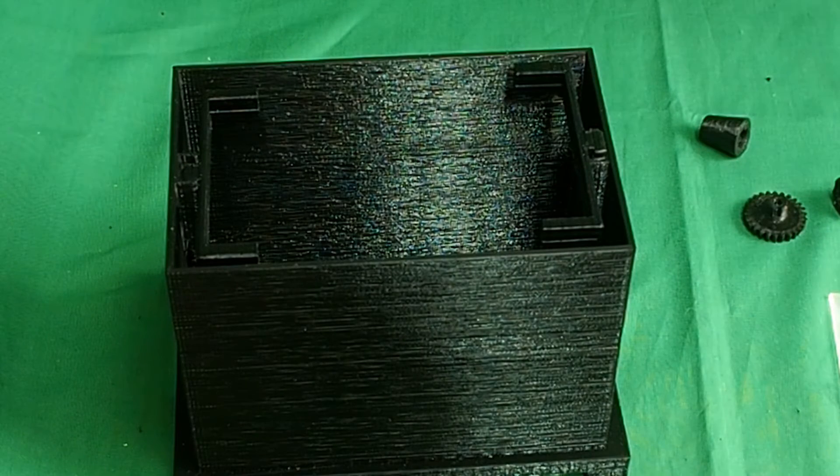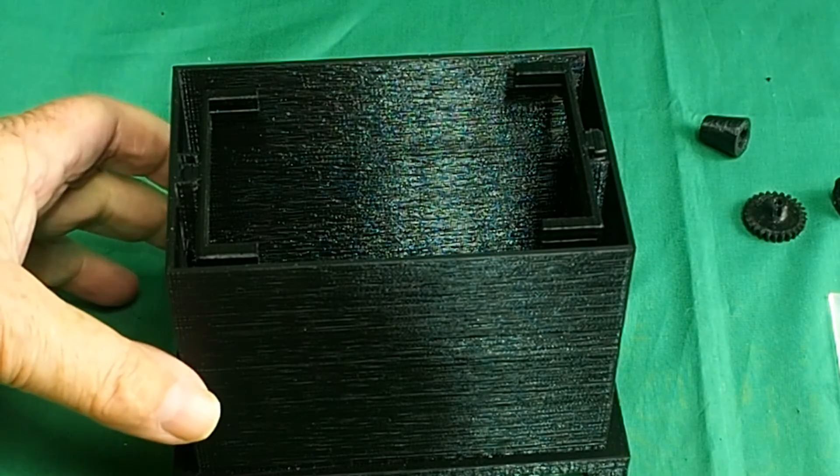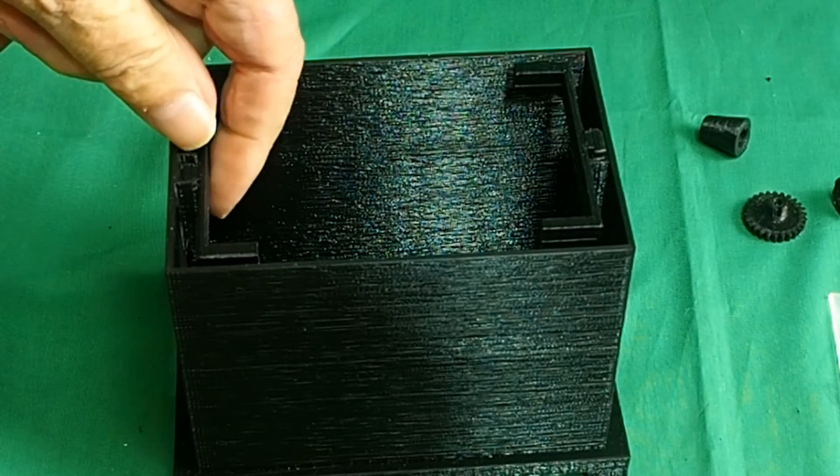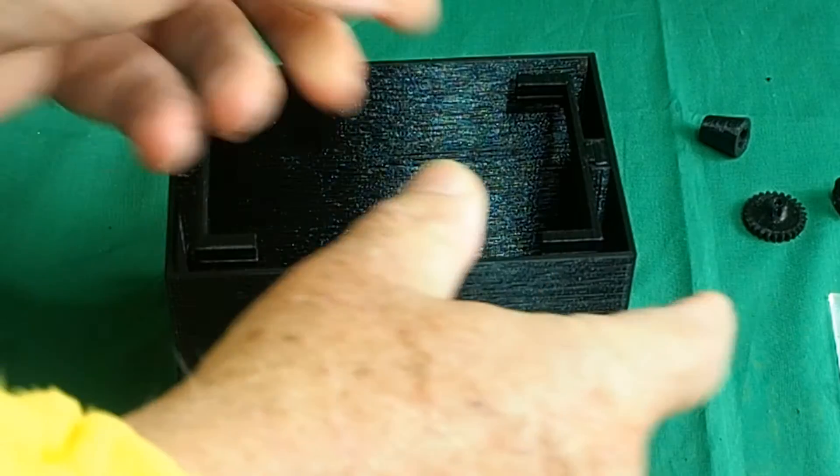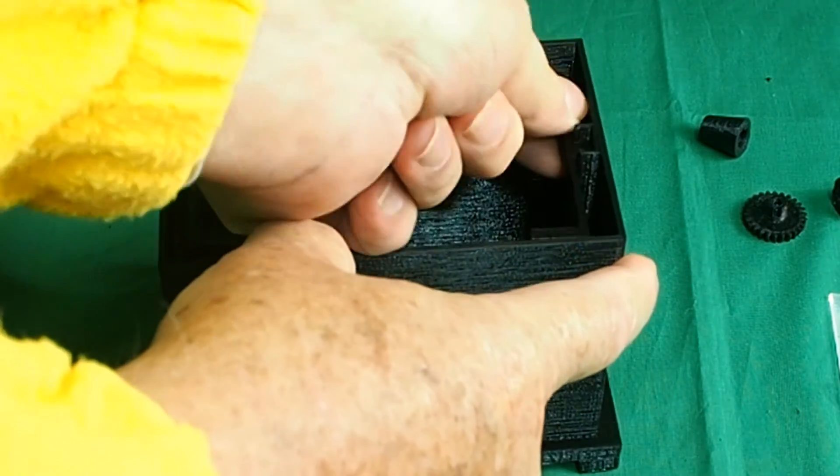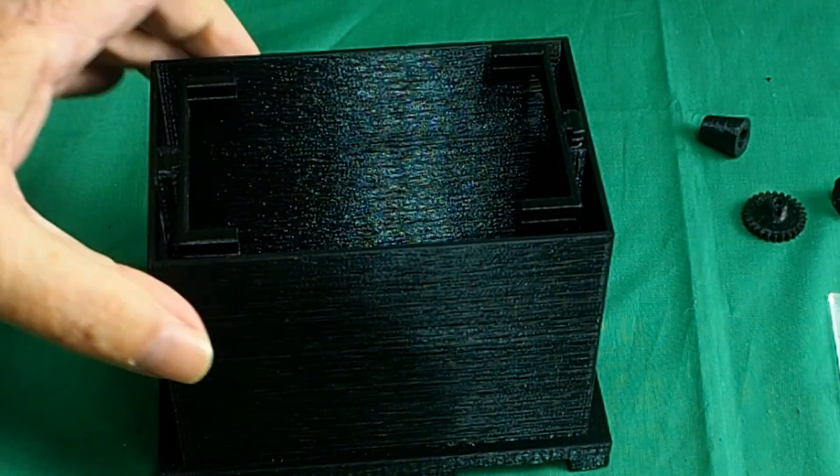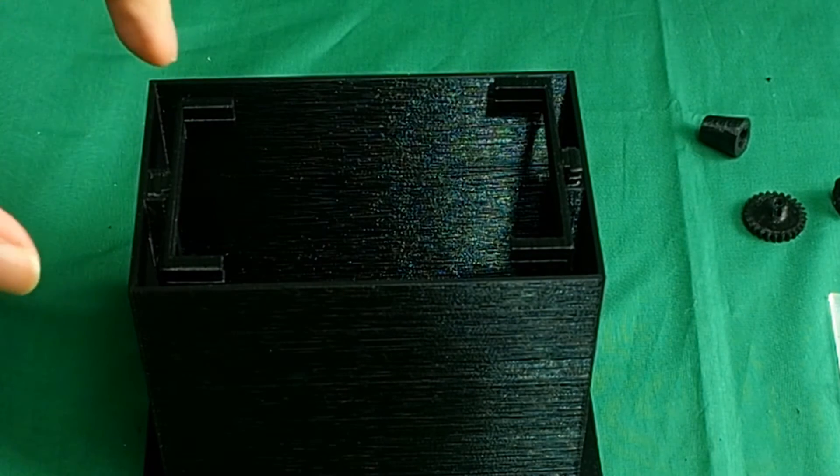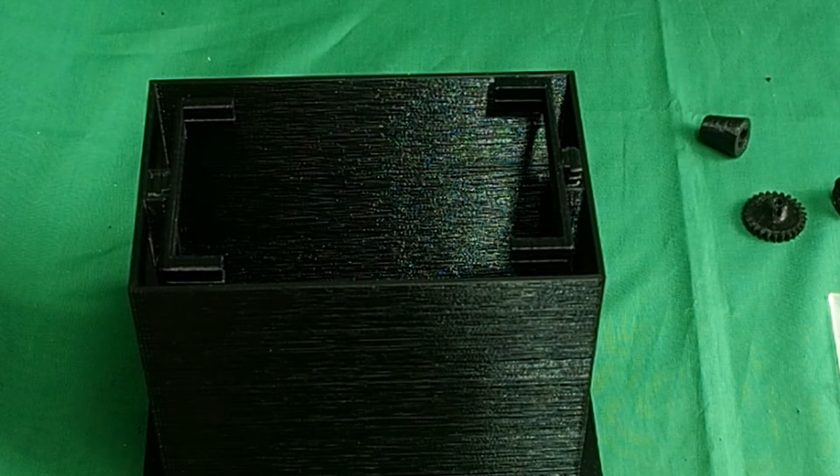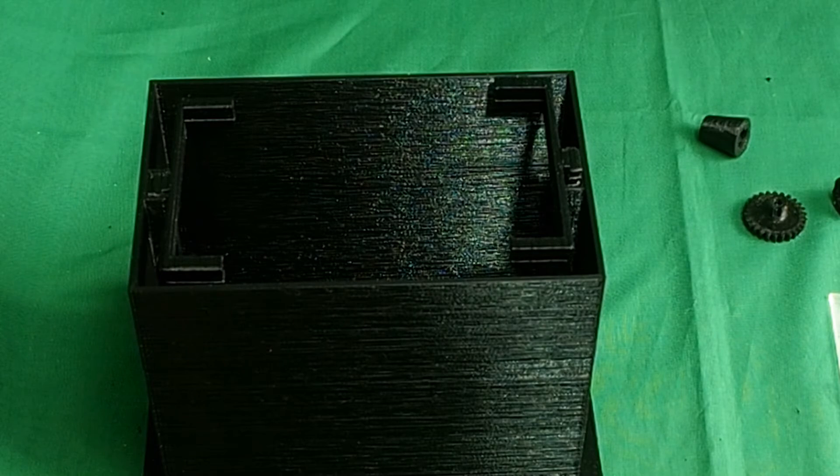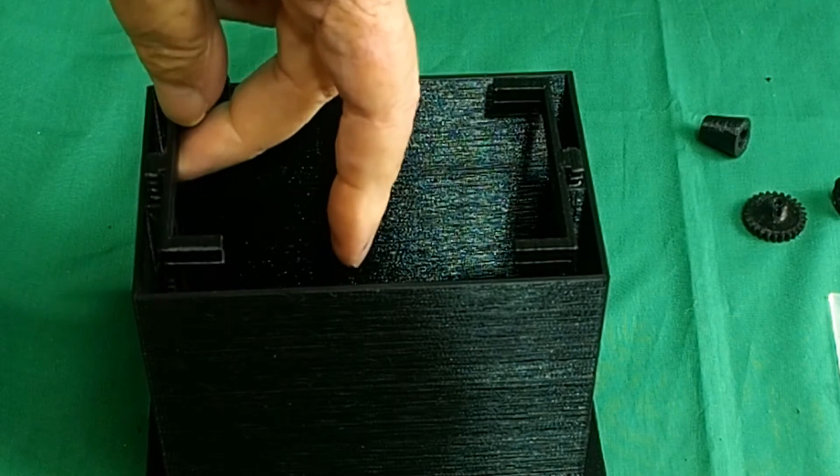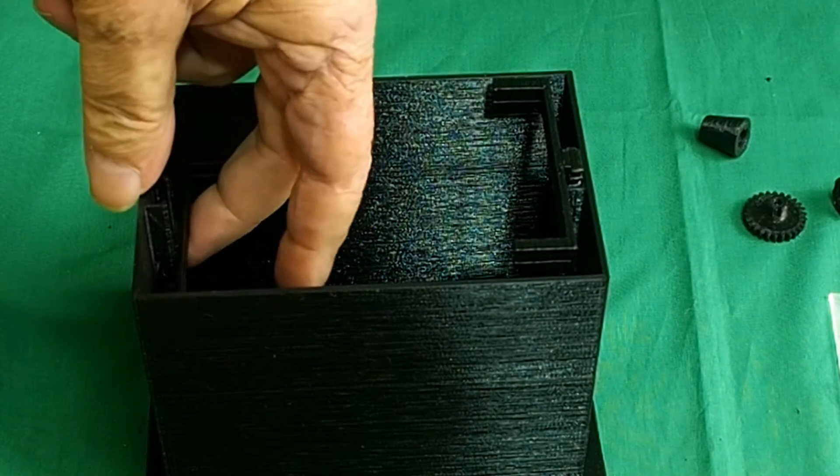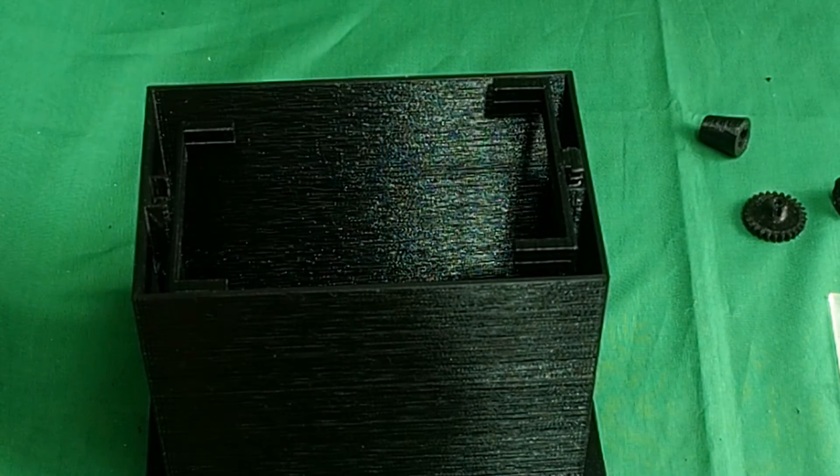Now when you first print these off, it might be quite stiff. So just run them up and down like that a few times quickly, just to bed them in. And you might like to put a little smear of Vaseline on that as well, to get it to move in and out freely. You don't want it to be too free because you want a little bit of friction.